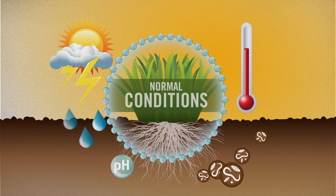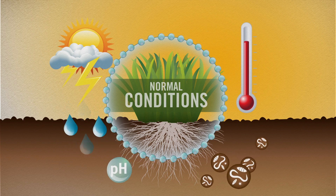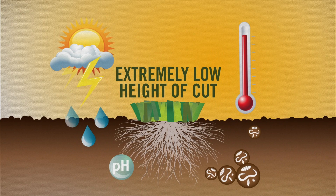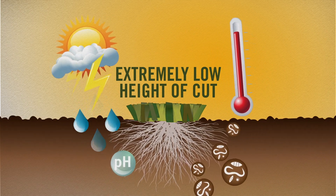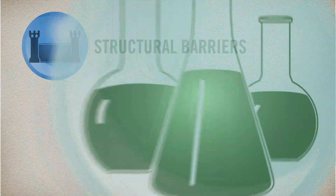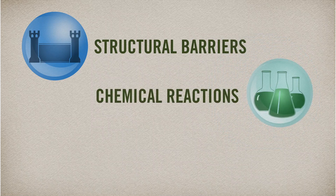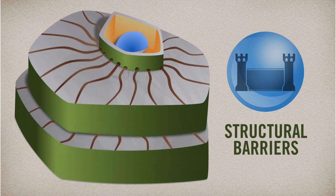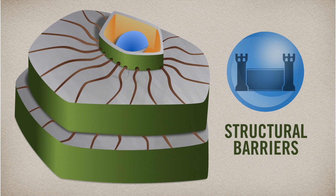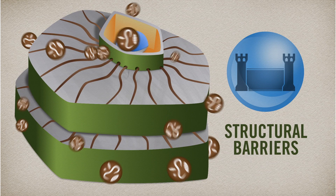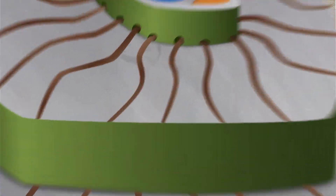Under normal conditions and higher heights of cut, turf can defend itself from stress and disease. However, extremely low heights of cut weaken the turf's three natural defenses: structural barriers, chemical reactions, and defense-related proteins and enzymes. A plant's structural defenses consist of the durable matrix within plant cell walls — healthy plants can repel most attacks thanks to this barrier.